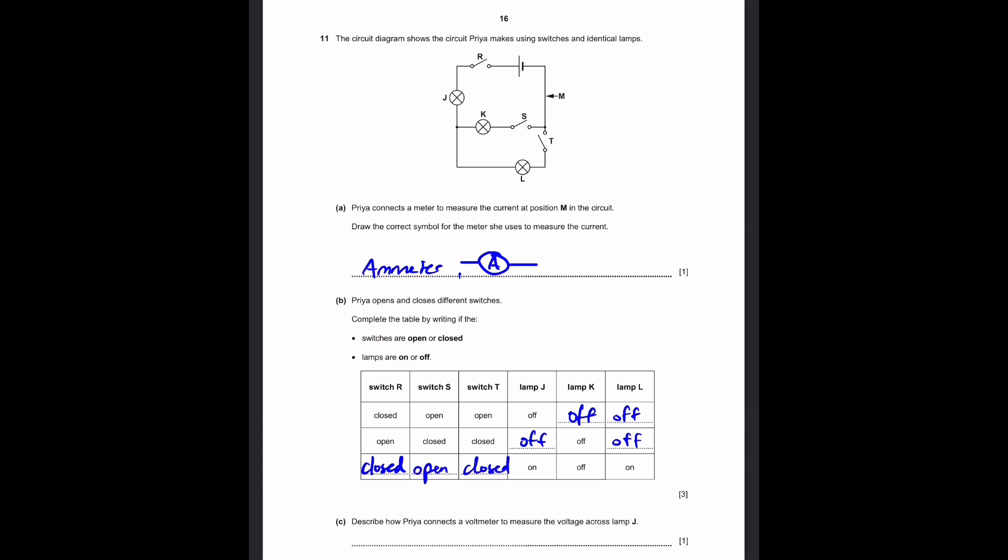Part C. Describe how Priya connects the voltmeter to measure the voltage across lamp J. Well, even though an ammeter may be connected in series with the circuit parts, the voltmeter must be connected in parallel to lamp J.